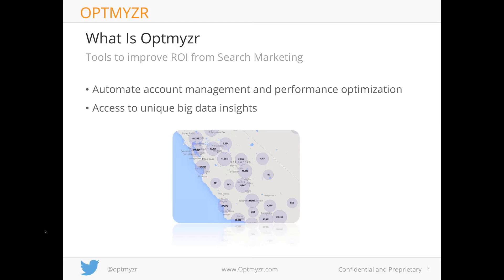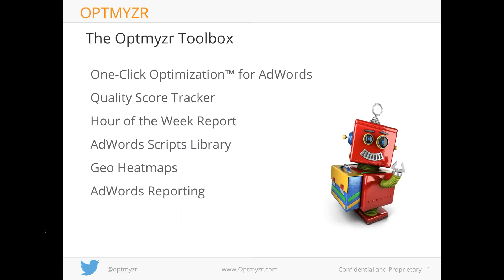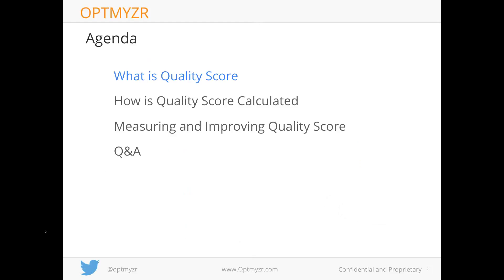What I'm doing nowadays is building a company called Optimizer. We're building tools to improve return on investment from search marketing and AdWords specifically. After leaving Google, I expected there would be great tools for advertisers to optimize accounts and get great reporting, but I wasn't happy with what was out there. We do two things: automate account management and give access to unique big data insights, including geo-visualizations of AdWords data on a map.